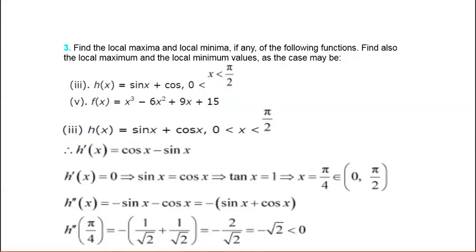This is the third question. Find the local maxima and local minima, if any, of the following functions. Find also the local maximum and local minimum values. Here we have taken two parts, third and fifth part. For part three, h(x) = sin x + cos x, and x lies between 0 to π/2, that is in the first quadrant.